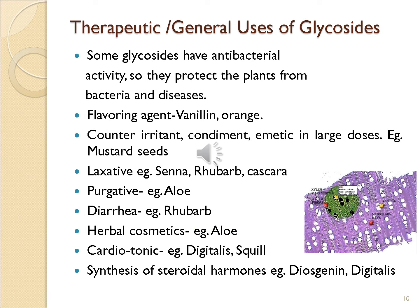Therapeutic uses of glycosides: some glycosides have antibacterial activities, protecting plants from bacteria and disease. Some act as flavoring agents, for example vanillin in orange and vanilla ice cream. Some glycosides act as counter-irritant, condiment, and emetic in large doses, for example mustard seed — mustard oil is an emetic drug.